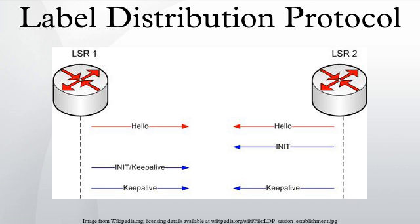The Label Distribution Protocol is a protocol defined by the IETF for the purpose of distributing labels in an MPLS environment. LDP relies on the underlying routing information provided by an IGP in order to forward label packets. The Forwarding Information Base, or FIB, is responsible for determining the hop-by-hop path through the network.